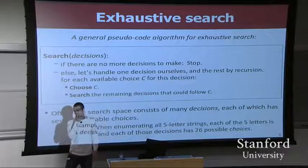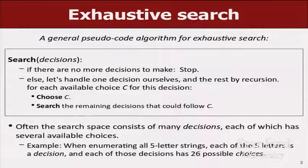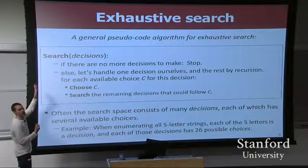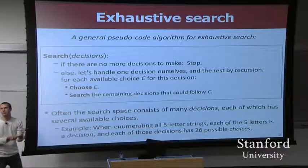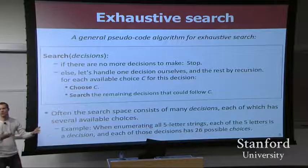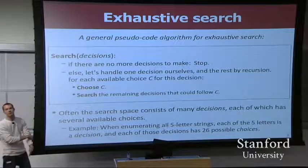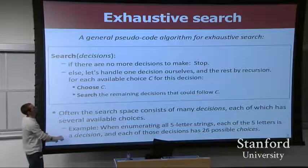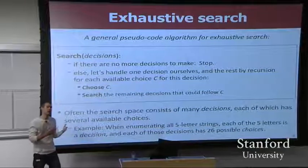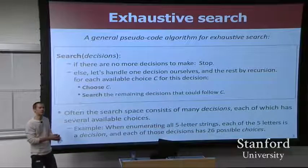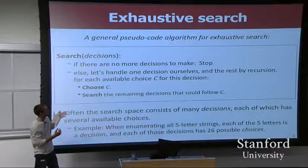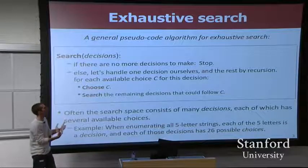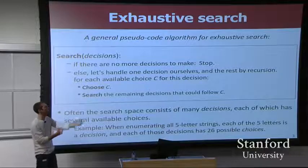If you're going to write code that searches exhaustively through a solution space, there's a general pattern your code usually has, and it's recursive. You have some sort of recursive function that's going to do searching, being passed parameters representing the space of things to search through - your decisions or choices. The code says: if there are no decisions left to be made, stop. But if there are decisions to make, choose to handle one decision and for each possible option, try it and explore what could come next.